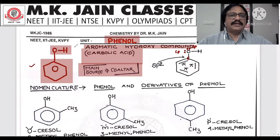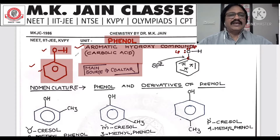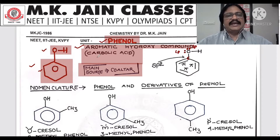This is an aromatic hydroxy compound. This group is called phenyl, and this is alcohol — so phenyl plus 'ol' gives us phenol. Its common name is carbolic acid, and its main source is coal tar.